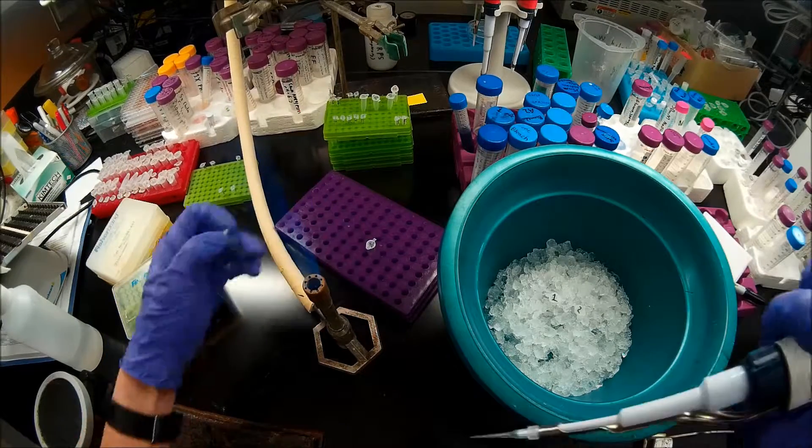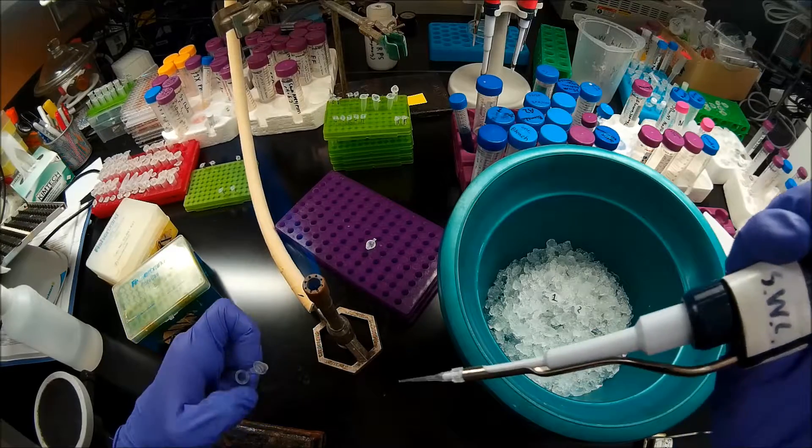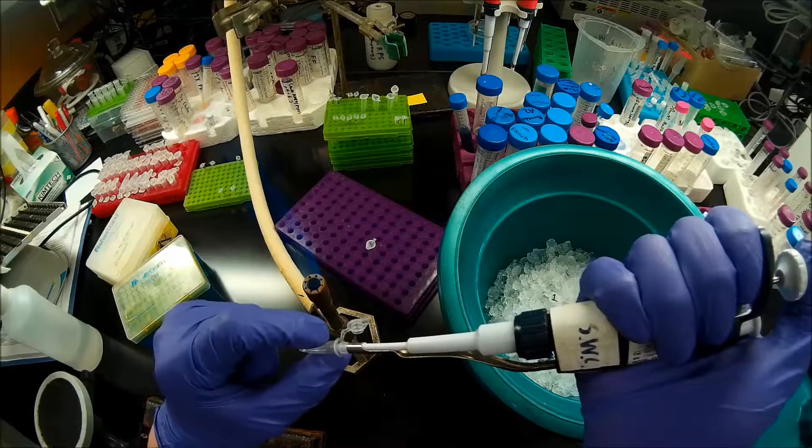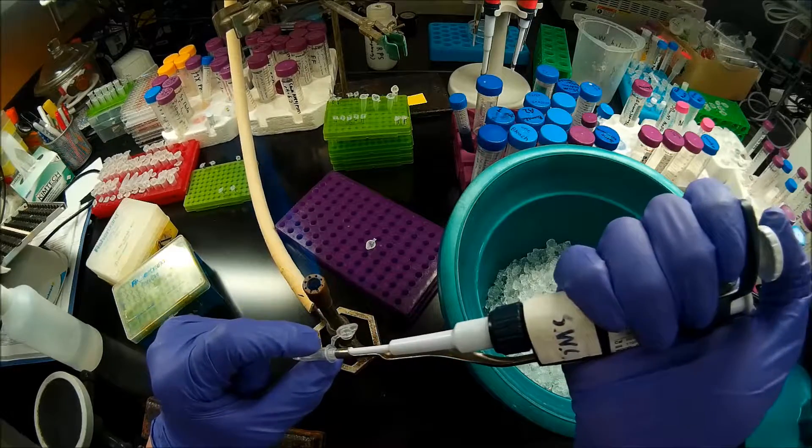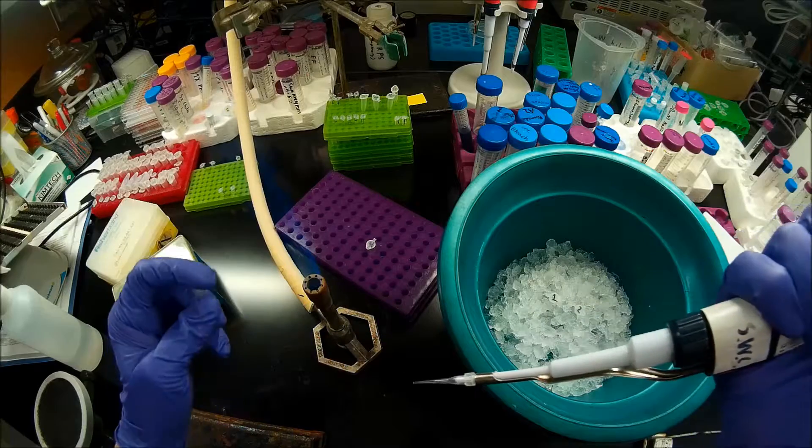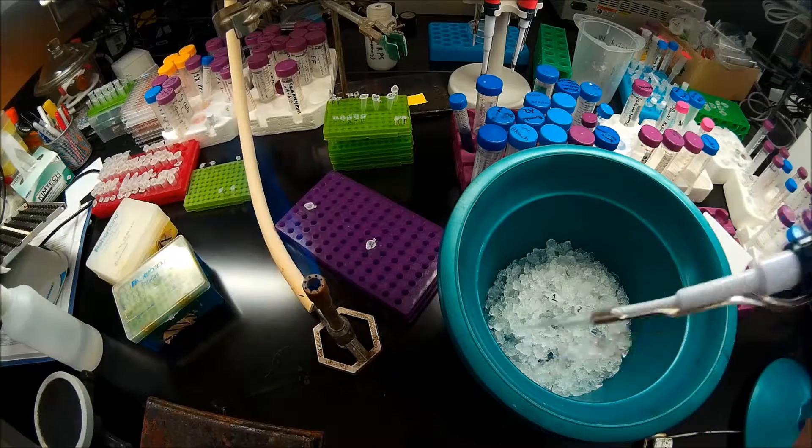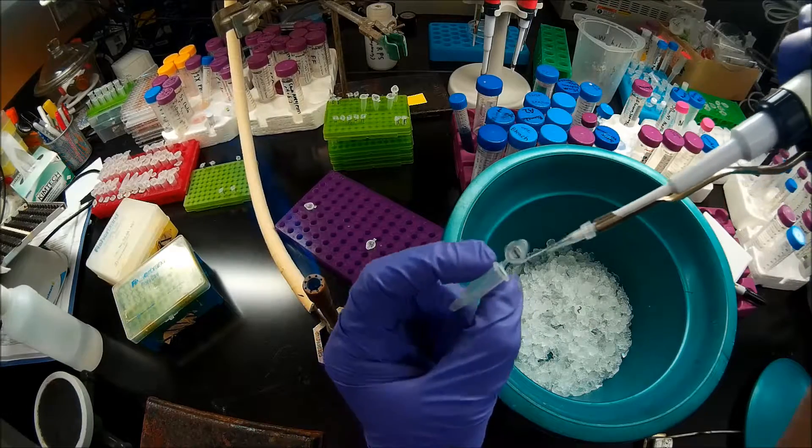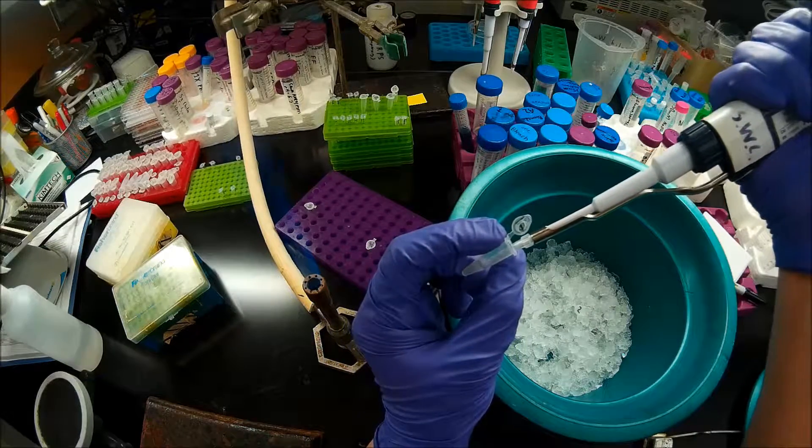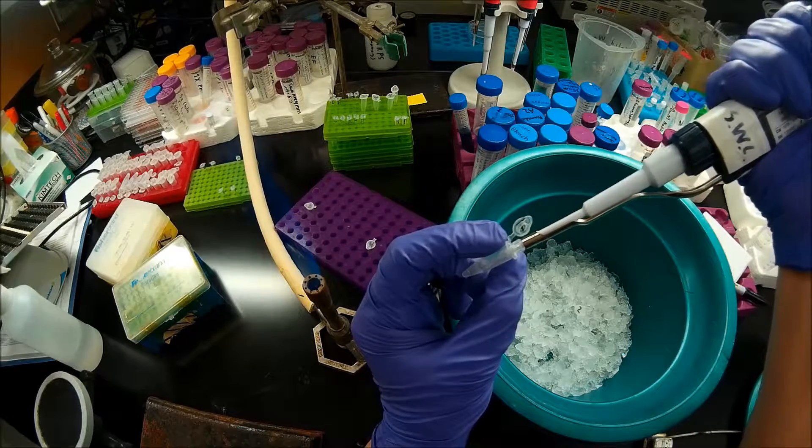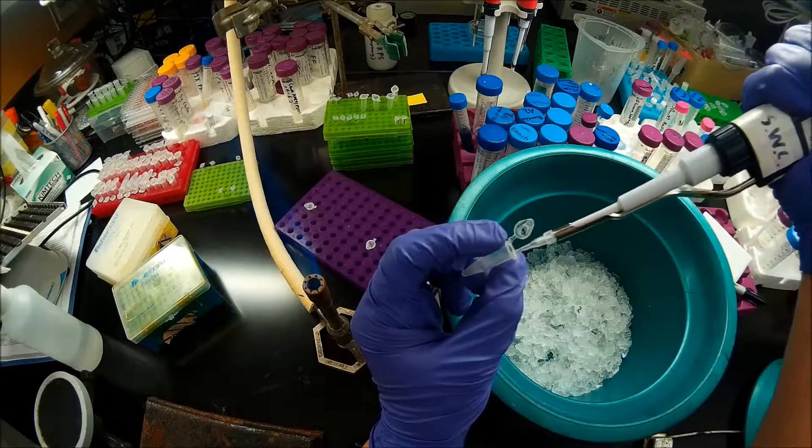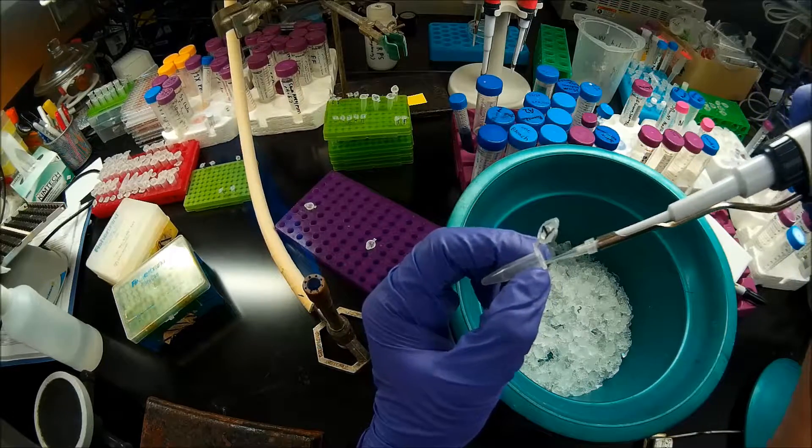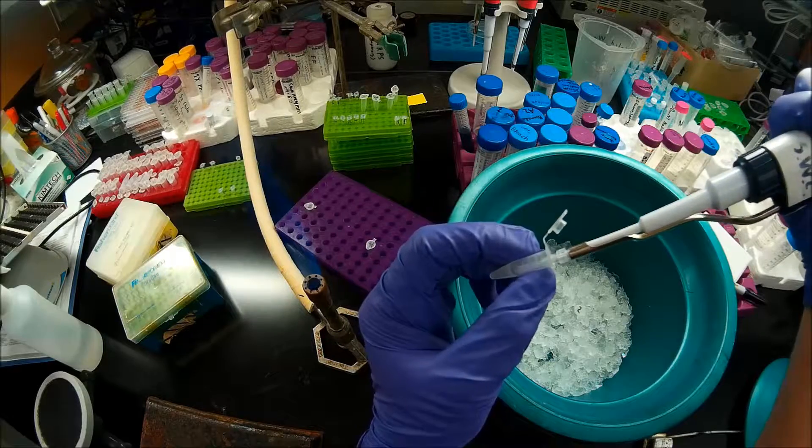These cells have a competency of about 10 to the 6th colony forming units per microgram. So I'm taking my ligation mixture. I'm actually just going to pipette up and down a couple times. And then I'm going to pipette that directly into the competent cells. And you'll note that I'm using my pipette to blow bubbles from the bottom of the competent cell aliquot. That's a really gentle way of mixing.